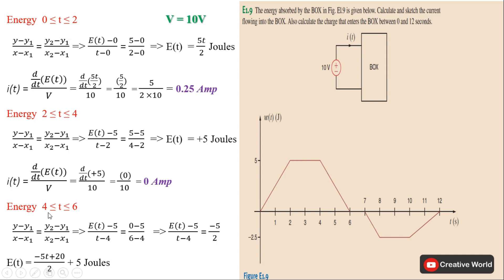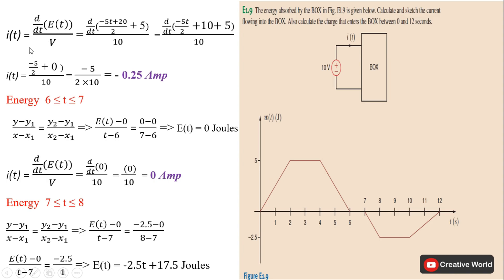Calculating the energy between 4 and 6 seconds: y₂ = 0, x₂ = 6, y₁ = 5, x₁ = 4. Putting these values gives the energy equation for this interval. Taking its derivative, we separate the constants — their derivatives are 0 — and the remaining term gives minus 5/2. Dividing by voltage 10, we get minus 0.25 ampere for the interval 4 to 6.